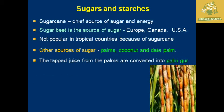For sugars and starches: in India, sugarcane is the chief source of sugar and energy. In countries like Europe, Canada, and the USA, sugar beet is the important source of sugar. In most tropical countries, sugar beet is not popular because of the prevalence of sugarcane. Other sources of sugar crops include palm, coconut, and date palm. The tapped juice from sugarcane, sugar beet, or other sugar-containing crops is converted into jaggery or sugar for daily use.